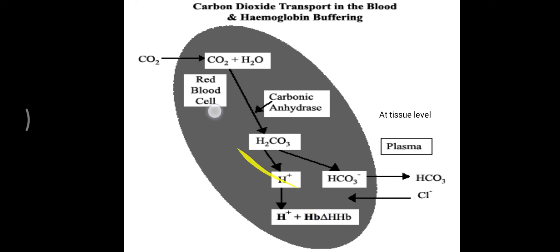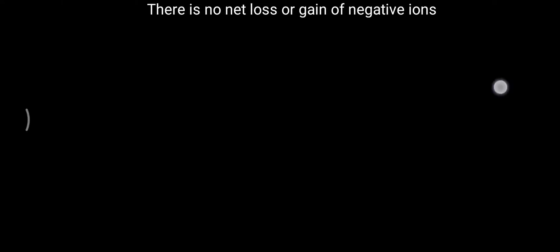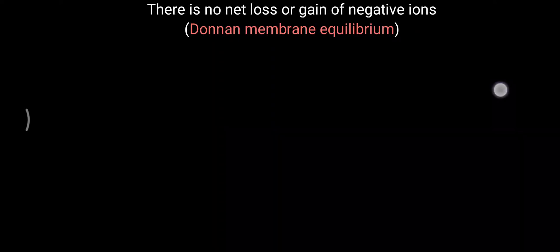The proton that is generated combines with hemoglobin to form HHb. The whole RBC is then transported from the tissue to the lung. There is no net loss or gain of negative ions in the form of bicarbonate or chloride, which also explains Donnan membrane equilibrium.